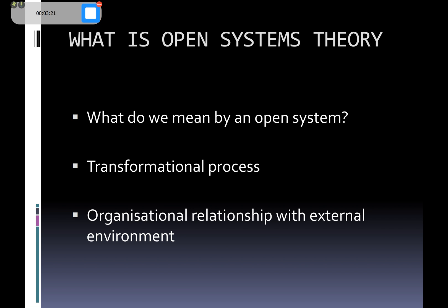Moving from systems theory to open systems theory, the difference is that systems theory might look at what's happening within the company, whereas open systems theory believes the organisation is open to the external environment. It's not just about what happens internally — there has to be a relationship with the external environment, including customers, suppliers, and where you're getting your raw materials from.